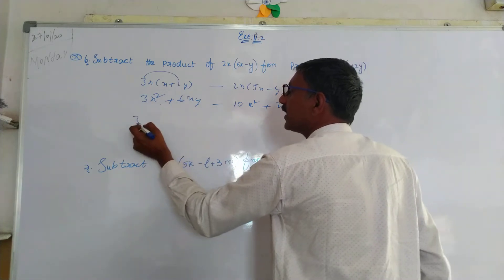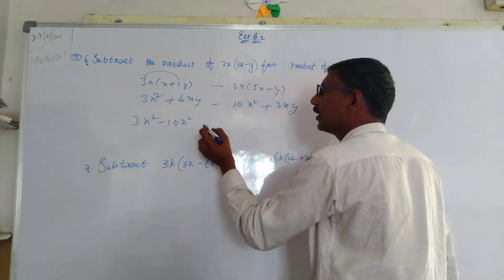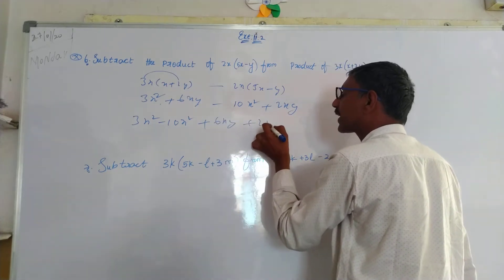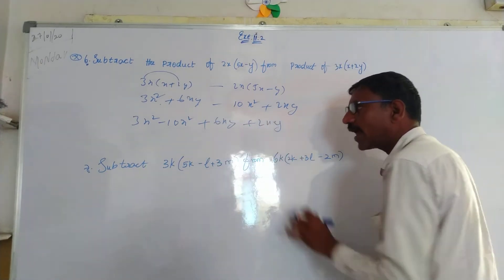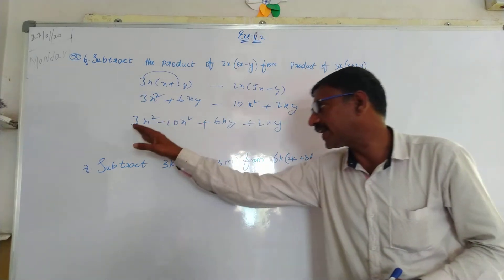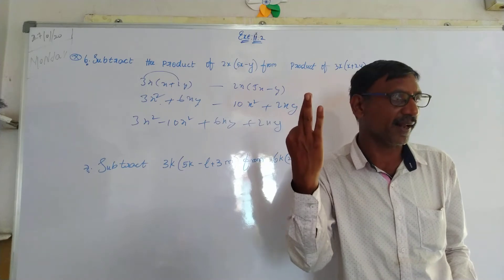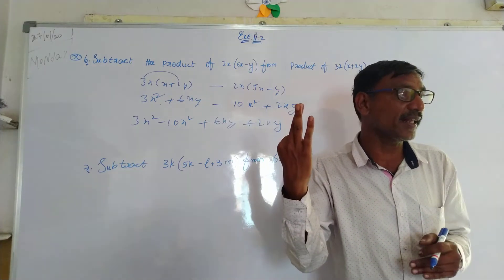You have to write the terms. 3x square minus 10x square, plus 6xy plus 2xy. You have to write the terms. So 3x square, 10x square. You can see 7x square. You will have to write the terms.